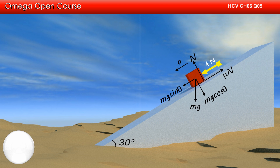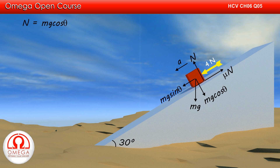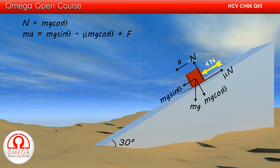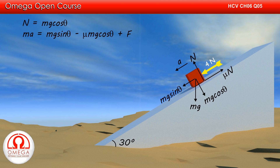Let the acceleration of the block along the incline be A. Since the block can move only along the incline, the component of gravity perpendicular to the incline must be balanced by the normal contact force, and hence normal must be equal to Mg cos theta. Net force down the incline must be equal to mass into acceleration. Therefore, MA must be equal to Mg sin theta minus mu Mg cos theta plus F.